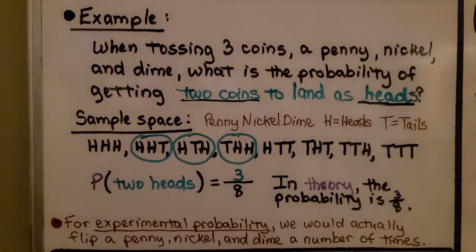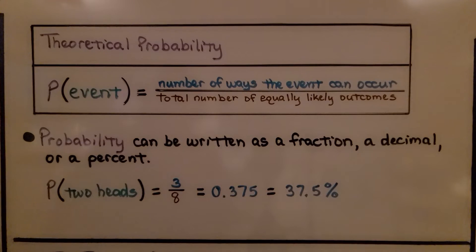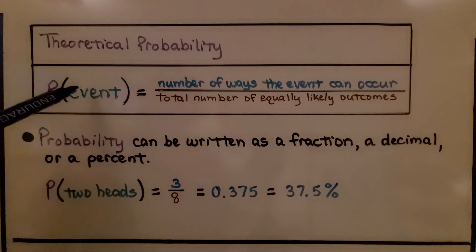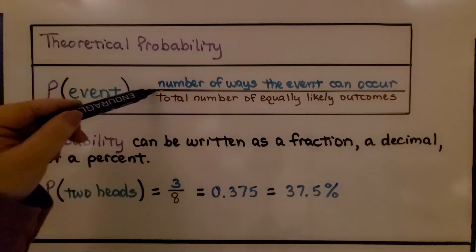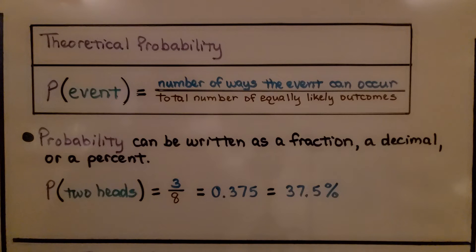For experimental probability, we would actually flip a penny, nickel, and dime a number of times and then find what the experimental probability is. So for theoretical probability, we have the probability of the event is equal to the number of ways the event can occur to the total number of equally likely outcomes. And probability can be written as a fraction, a decimal, or a percent.